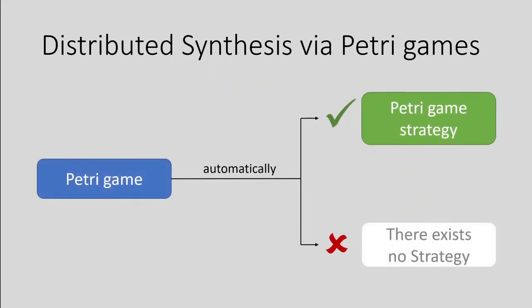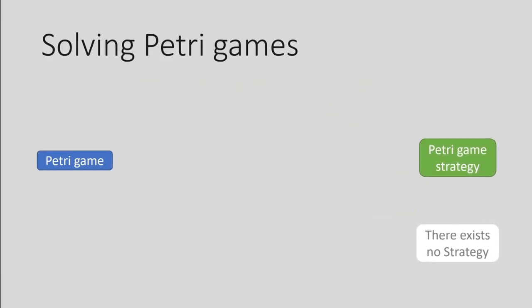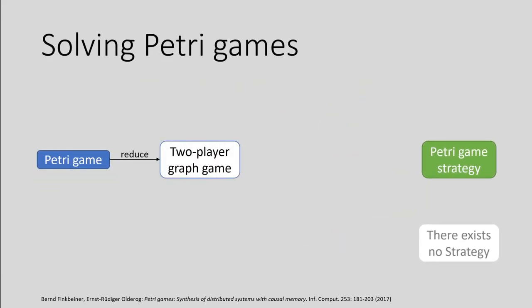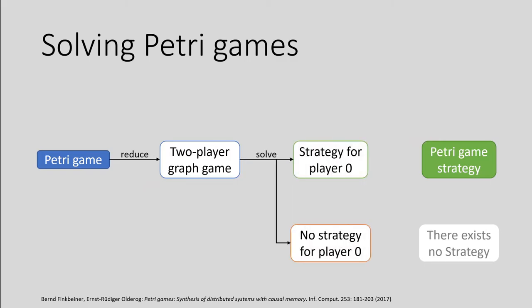To get a strategy for a given Petri game, it can be reduced to a two-player game on a graph, which is computationally feasible. Depending on whether we have a strategy for player 0 in this game, we can translate it into a Petri game strategy.